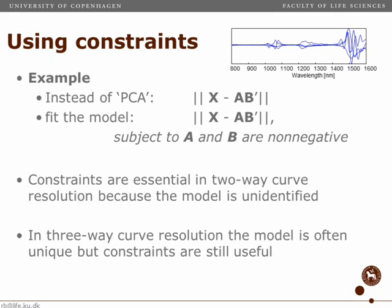When talking about two-way curve resolution, like multivariate curve resolution, it's really essential to use constraints like this to get meaningful models. In three-way data, we don't always need that — very often our models will just come out non-negative if the underlying spectra are non-negative. But sometimes we can use constraints to make sure that the model is accurate or to handle certain problems, and we'll see some examples of that.